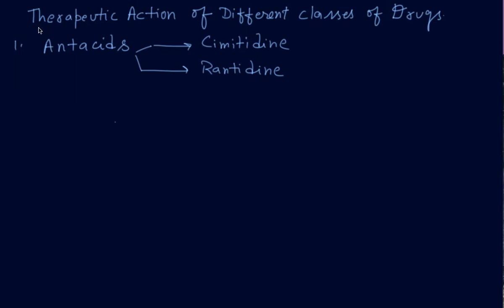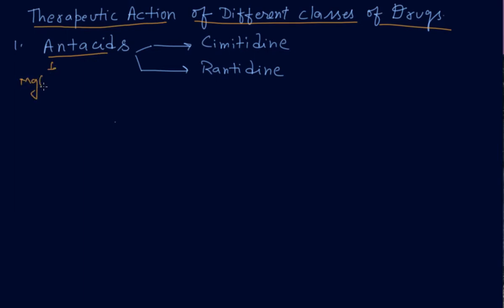In this class, we are going to discuss the therapeutic actions of different classes of drugs. The first is antacids. Commonly used antacids include cimetidine, milk of magnesia (MgOH), sodium bicarbonate (NaHCO3), and milk.